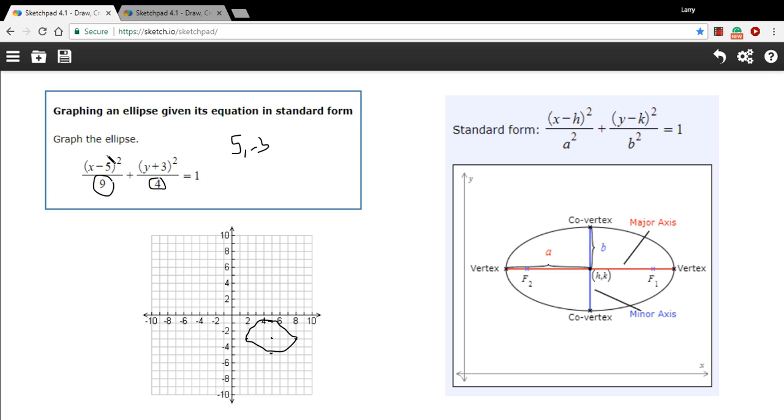You can get the center by taking negative values of these numbers inside the x and y squared terms. And then you get sort of the radii, the lengths of each side of the major and minor axes by taking the square roots of the denominators here.